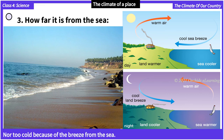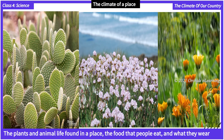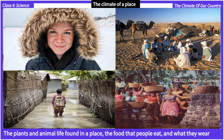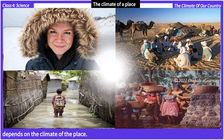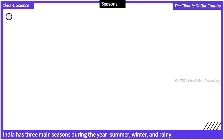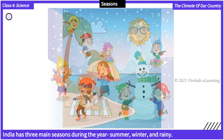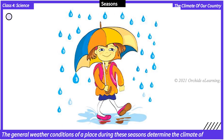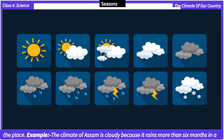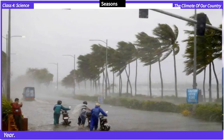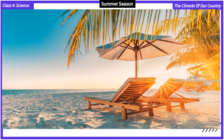The plants and animal life found in a place, the food that people eat, and what they wear depends on the climate of the place. India has three main seasons during the year: summer, winter, and rainy. The general weather conditions of a place during these seasons determine the climate of the place. For example, the climate of Assam is cloudy because it rains more than six months in a year.